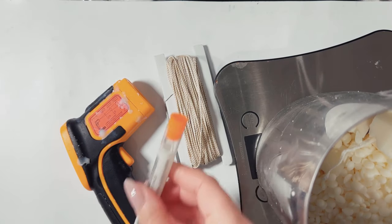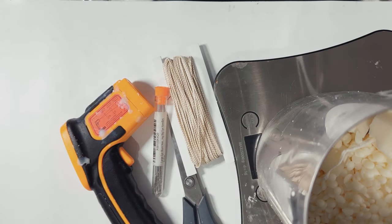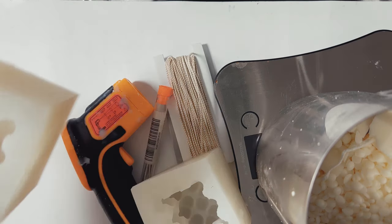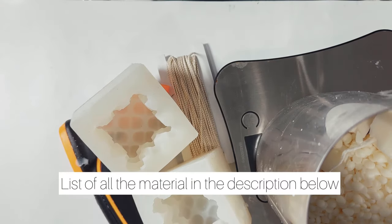You'll also need cotton wicks—I'm using unprepared raw cotton wick—some tapestry needles, and of course the silicone mold for the bubble heart candle. I will list and link everything I'm using in the description box below.